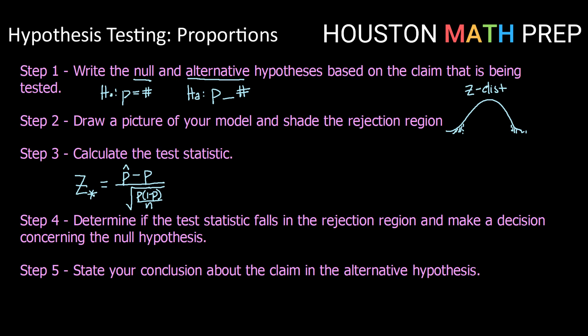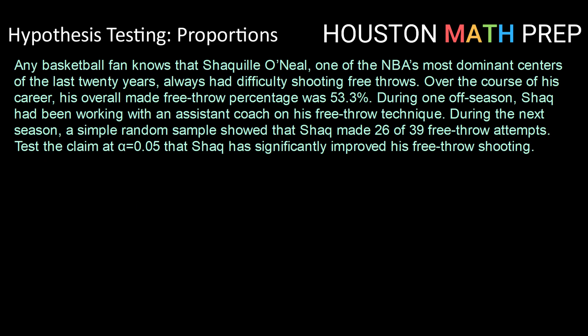Let's look at one of those in practice. Any basketball fan knows that Shaquille O'Neal, one of the NBA's most dominant centers of the last 20 years, always had difficulty shooting free throws. Over the course of his career, his overall made free throw percentage was 53.3%. During one offseason, Shaq had been working with an assistant coach on his free throw technique. During the next season, a simple random sample showed that Shaq made 26 of 39 free throw attempts. Test the claim, at alpha equals 0.05, that Shaq had significantly improved his free throw shooting.